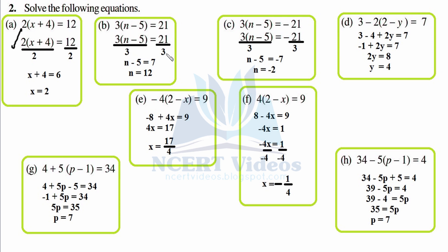Part b: 3 times (n minus 5) equals 21. Get rid of 3 by dividing both sides by 3. 3 cancels, so n minus 5 equals 7, and n equals 7 plus 5, which is 12. Alternatively, open the bracket: 3n minus 15 equals 21, get rid of 3 by dividing, and transpose minus 5 to get n equals 12.